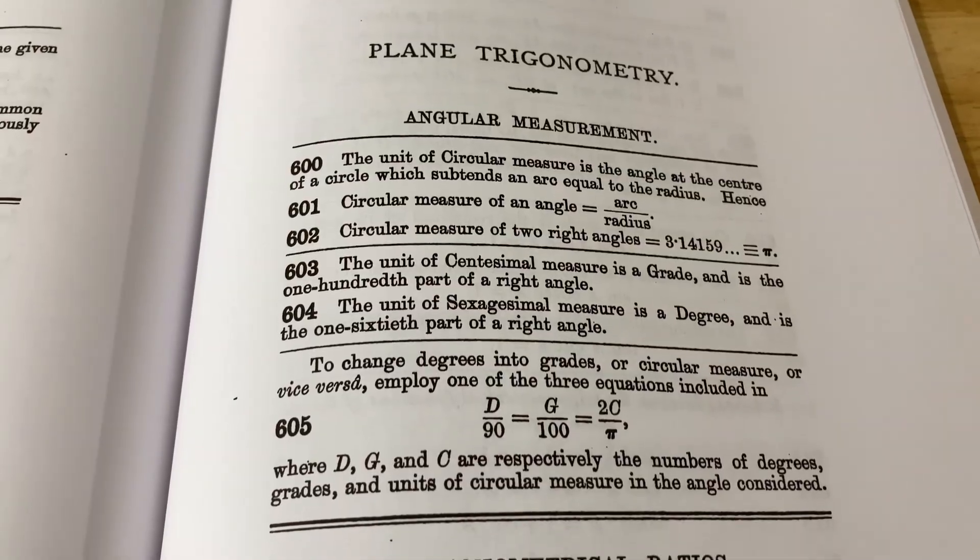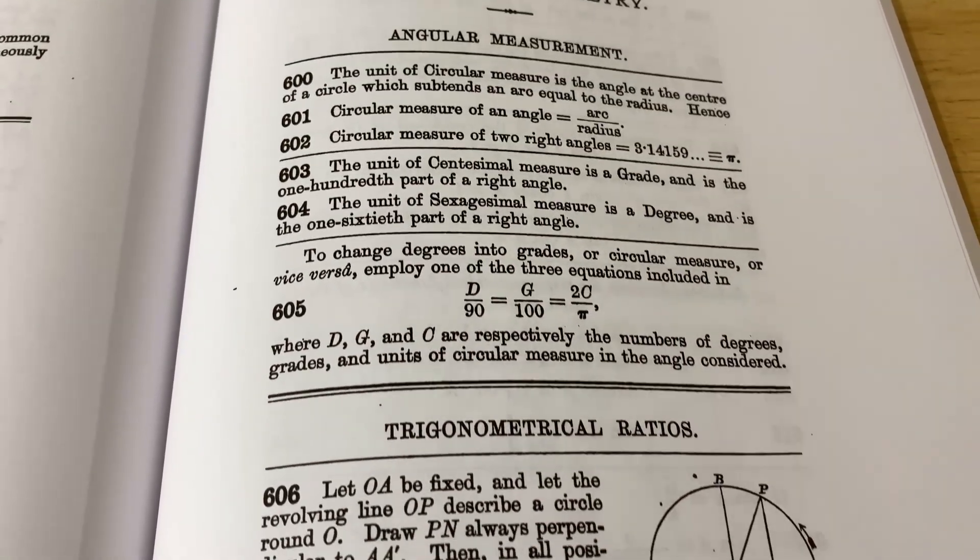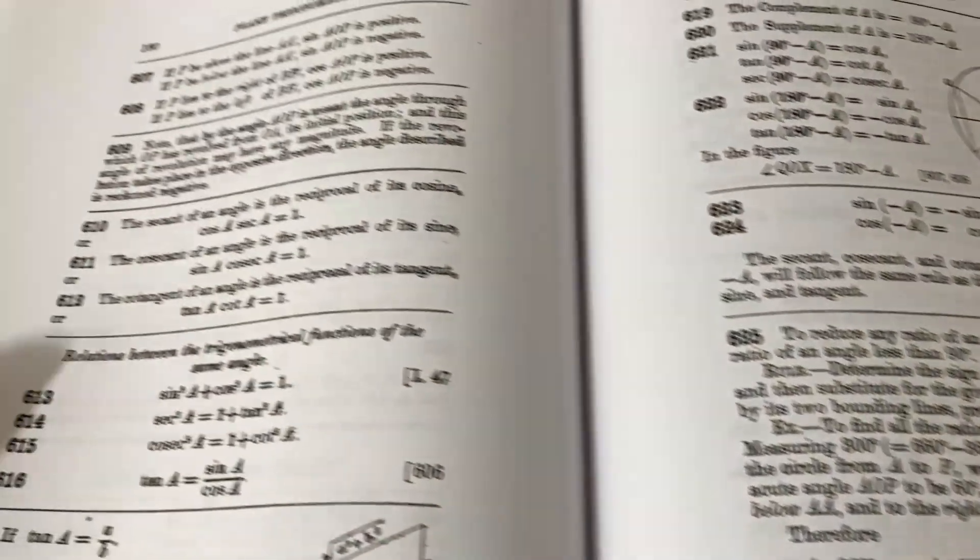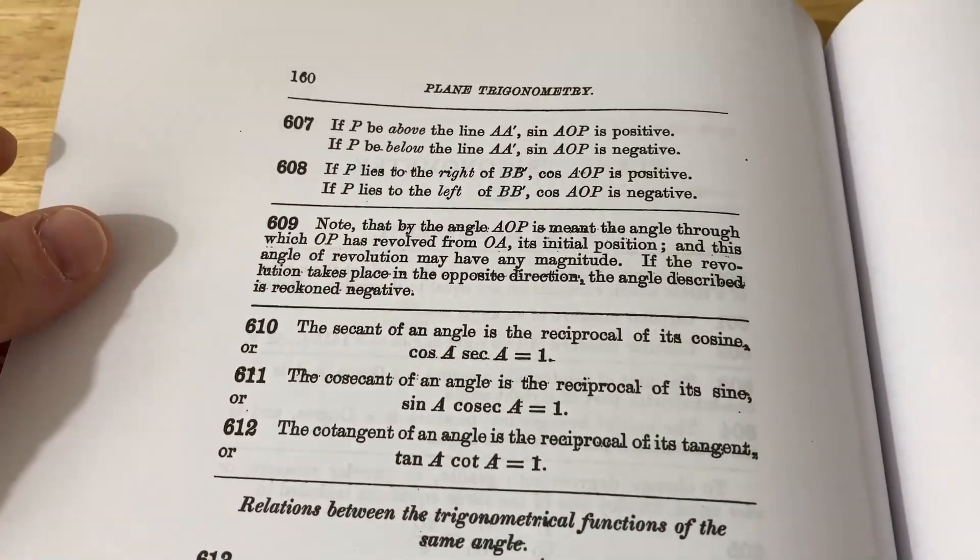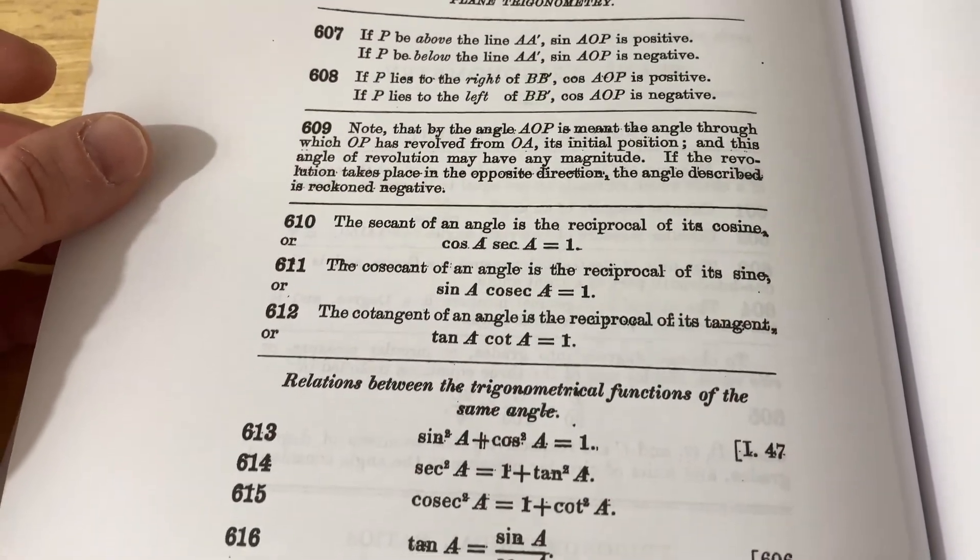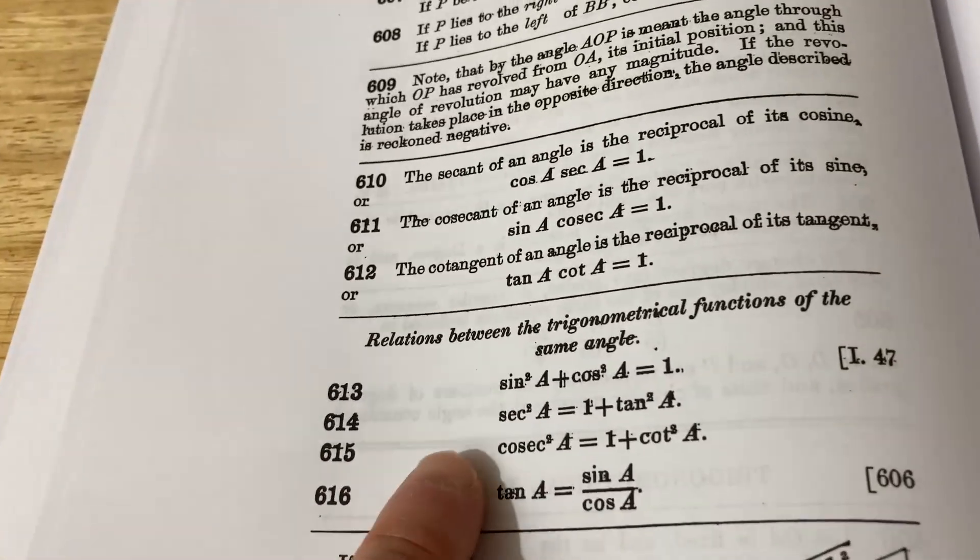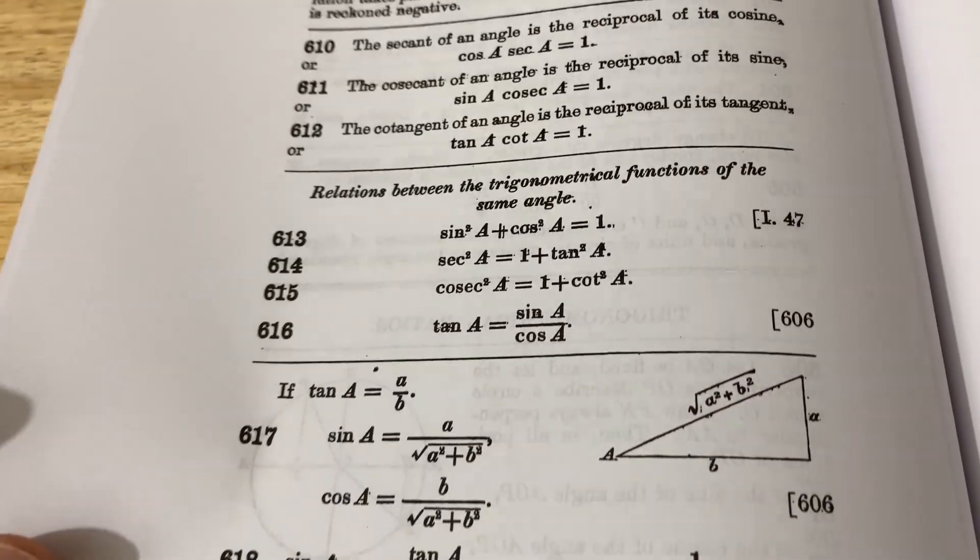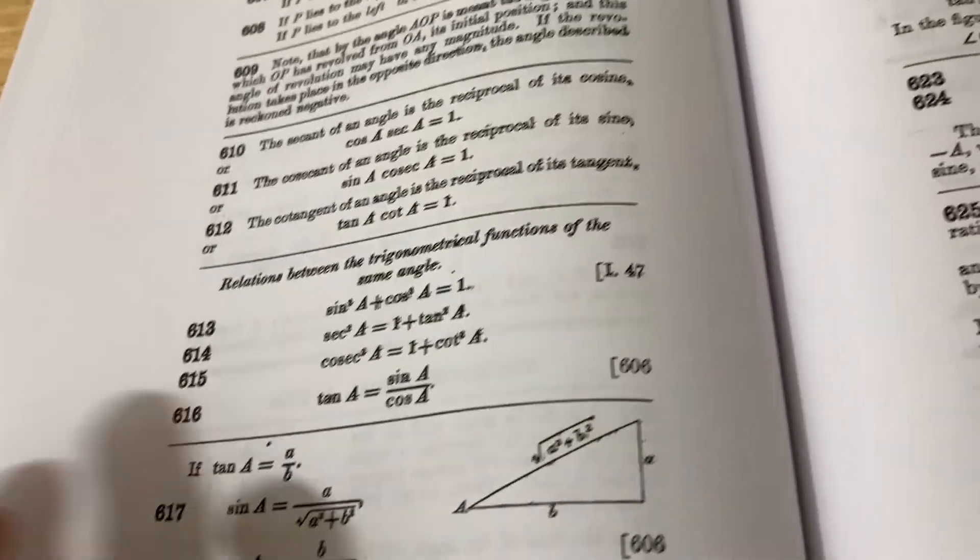Here the book goes into trigonometry. So it goes over all the important stuff that you need to know for trig. And you notice that there's not much in the way of examples. Oh, here's some identities. These might seem familiar. I mean, there's a few, but it's a very, very concise book.